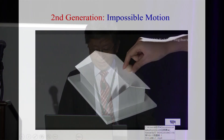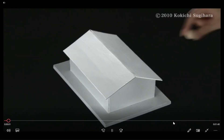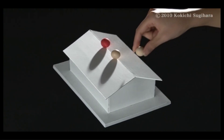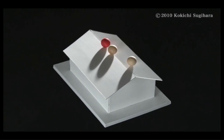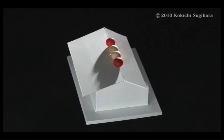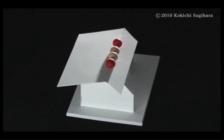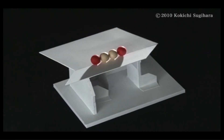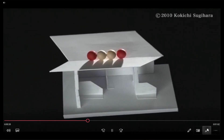Let me show several generations one by one by example. The second generation is the impossible motion. We have a roof, but the boards put on it behave like that. The behavior looks impossible but that's simply because of optical illusion. The center of the roof is not the highest top but the bottom of the valley, and so the boards roll downhill according to gravity. This is the second generation.